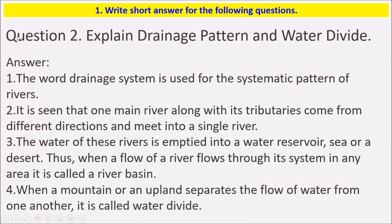The second question is: explain drainage pattern and water divide. The word drainage system is used for the systematic pattern of rivers. One main river along with its tributaries comes from different directions and meets into a single river. The water of this river is then emptied into a water reservoir, sea, or a desert. When a flow of a river flows through its system in any area, it is called a river basin.